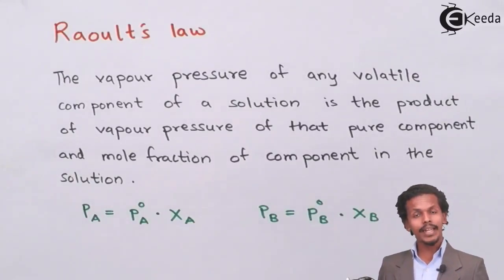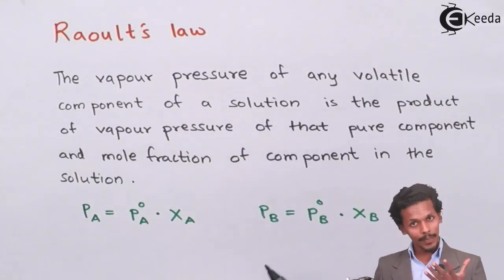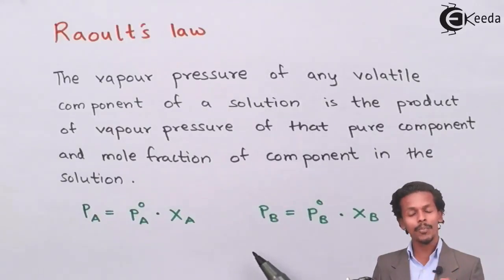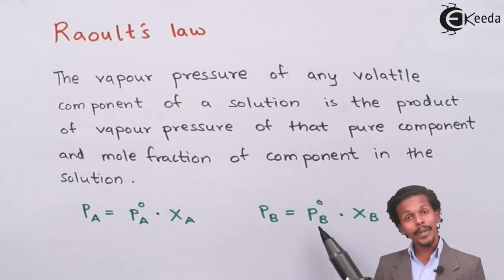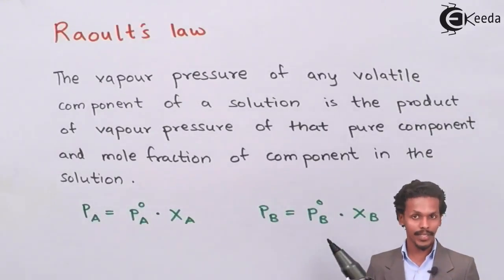Another component, suppose B, then the vapor pressure of component B will be equal to vapor pressure of pure component B, that is P naught B, and it will be the multiplication of X B, the mole fraction of B.